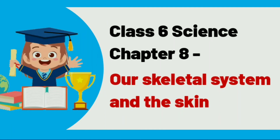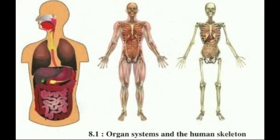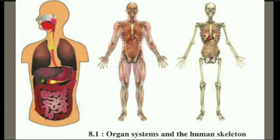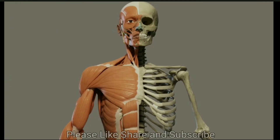General Science Standard 6, Chapter 8: Our Skeletal System and the Skin. Can you recall which organ systems you see in the figure alongside? In the previous classes, we have learnt about some organ systems, their functions and their locations in our body.